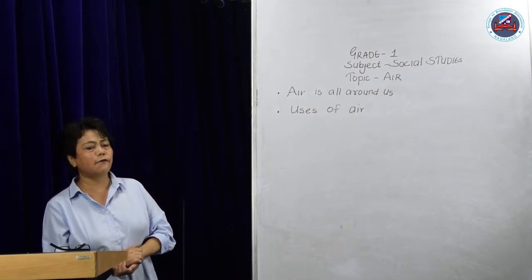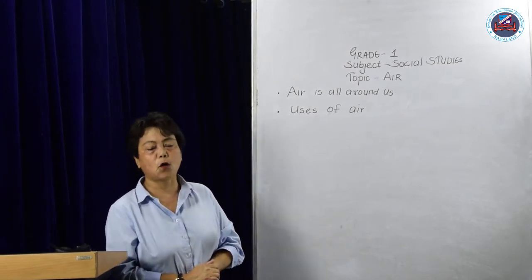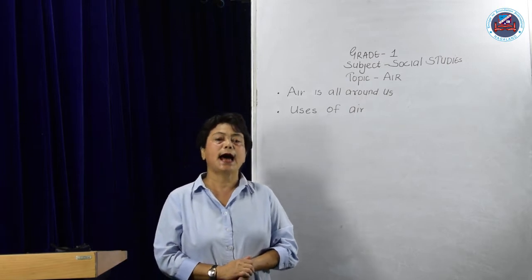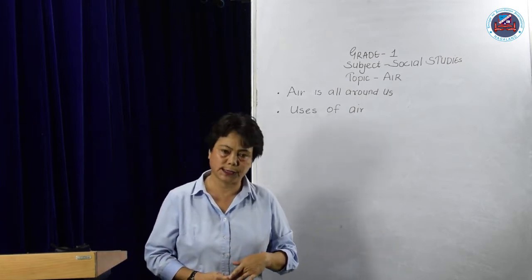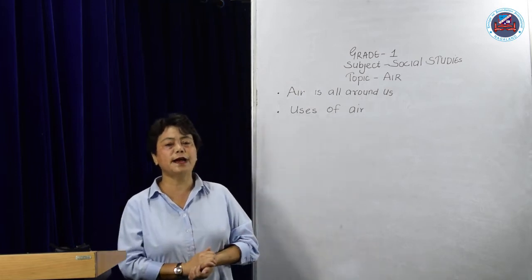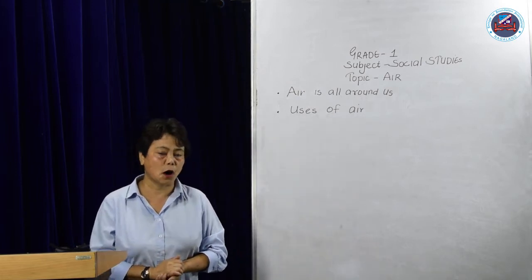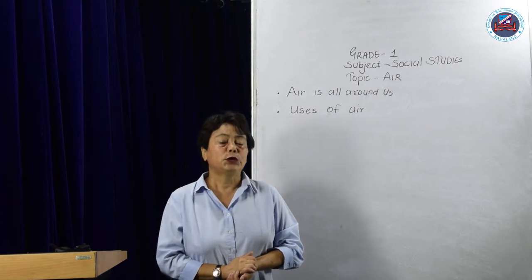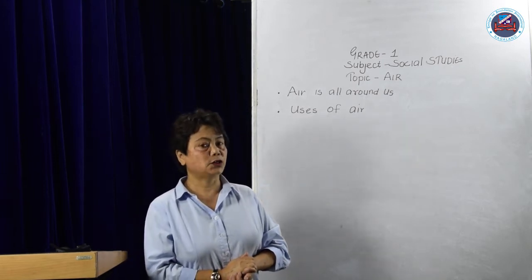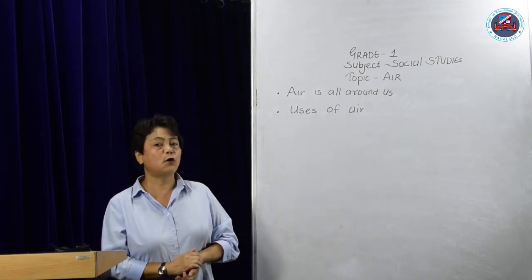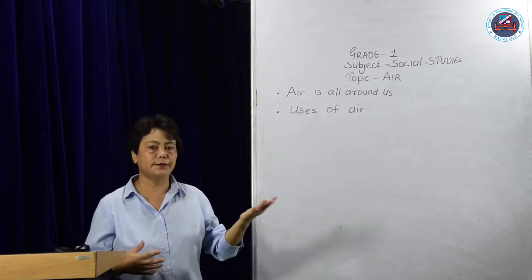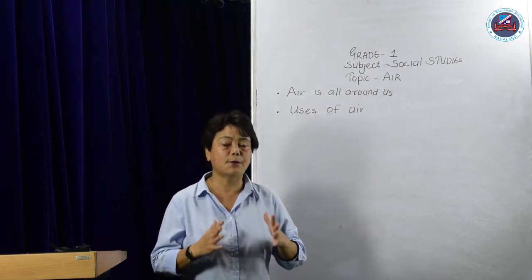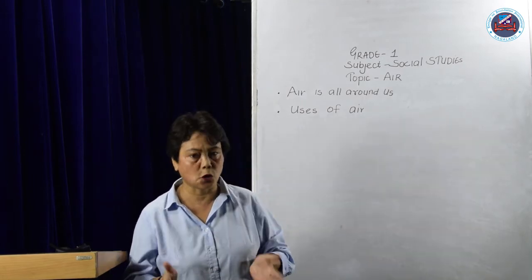Now, fast moving air is called wind. And soft, gentle wind is called breeze. Very fast moving air, that is called storm. Sometimes, you can see outside when the storm starts coming, all the trees will start blowing very fast and things are flying here and there. So, that type of air is called storm.